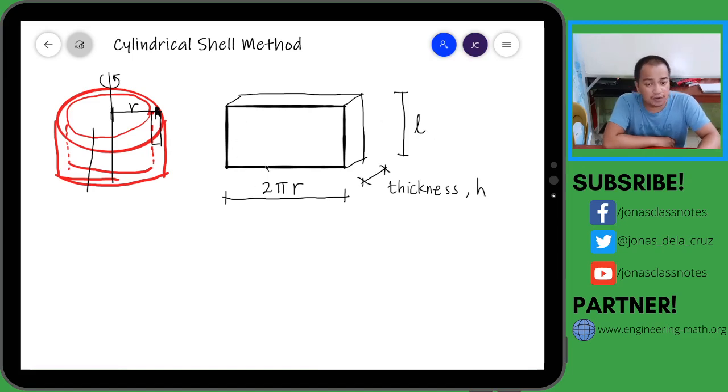Okay, so what is the volume then of the rotated solid? The volume is just length times width times height. So that is 2πr times the height times the thickness h. So ang nagbabago lang naman dito is r, L, and h.